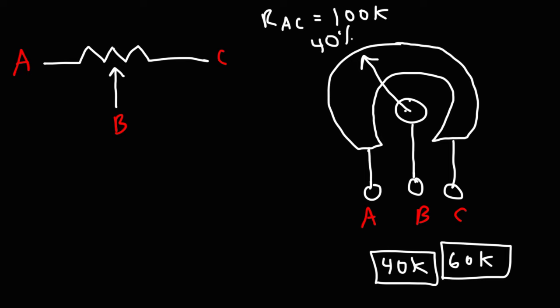You can use all three terminals in a circuit or even just two. For instance, if you just use A and B, you can use it as a variable current limiting resistor.